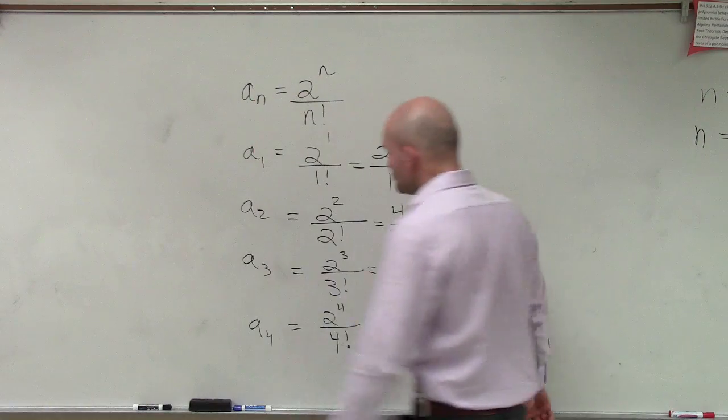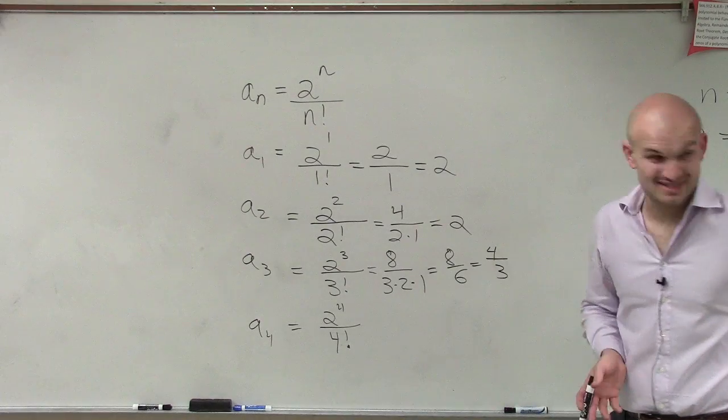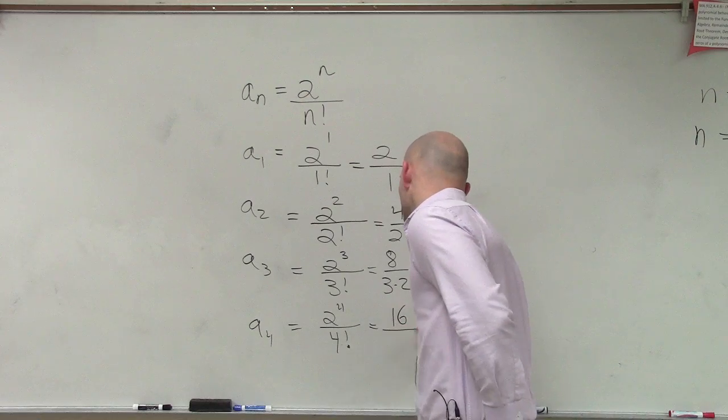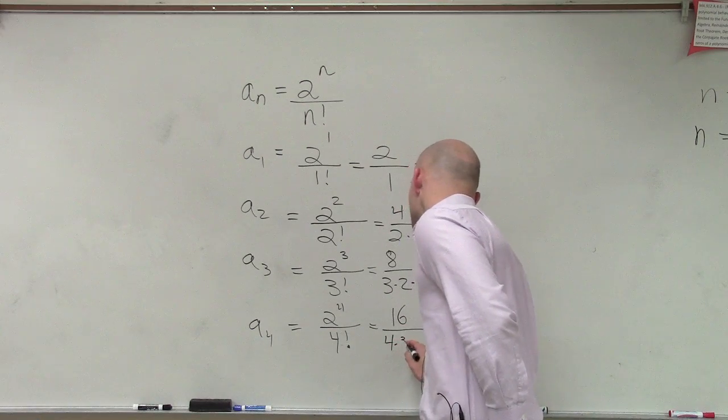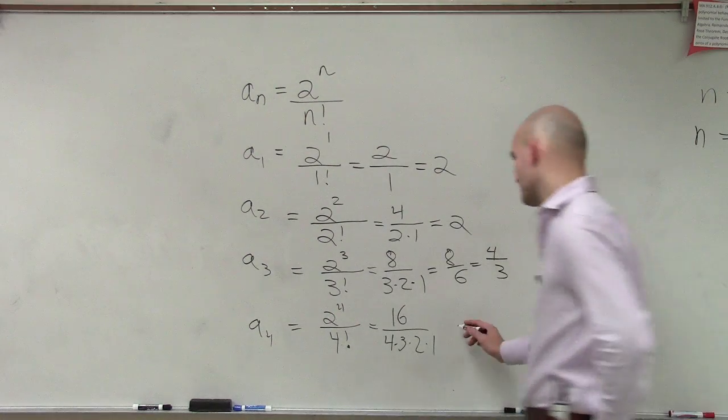So now we do 2 to the fourth. 2 to the fourth is going to equal 16, and 4 factorial is 4 times 3 times 2 times 1, which is 24.